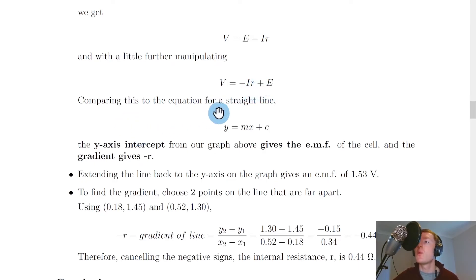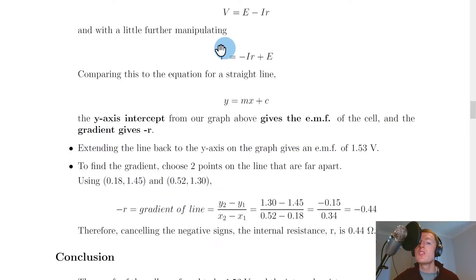And we can then compare this to the equation for a straight line y equals mx plus c where the voltage here was the y-axis the current remember was the x-axis and that means that one of these terms will be given by our gradient from the line and one of the terms will be given by the y-axis intercept. By comparing these two we can actually see that c is equal to e. So the emf is actually the y-axis intercept.